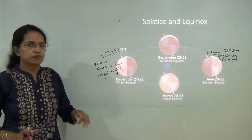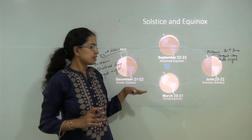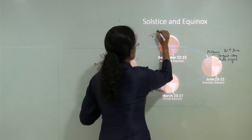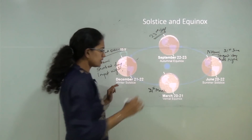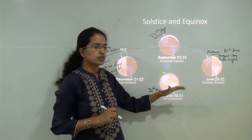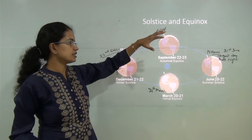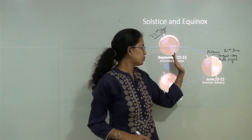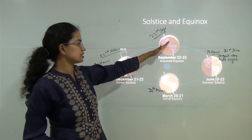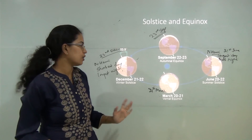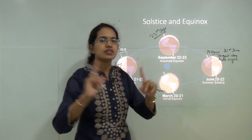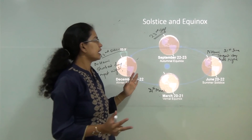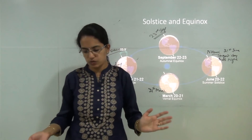Coming to the equinoxes, you have the autumn equinox and the vernal equinox. The equinoxes fall on 21st March and 23rd September. In the northern hemisphere, 21st March is the vernal or spring equinox, and 23rd September is the autumn equinox. During equinoxes you have equal days and equal nights. During solstices — summer or winter — you have the maximum difference between day and night. The solstices give the shortest days and longest nights or vice versa, while equinoxes give equal day and night.